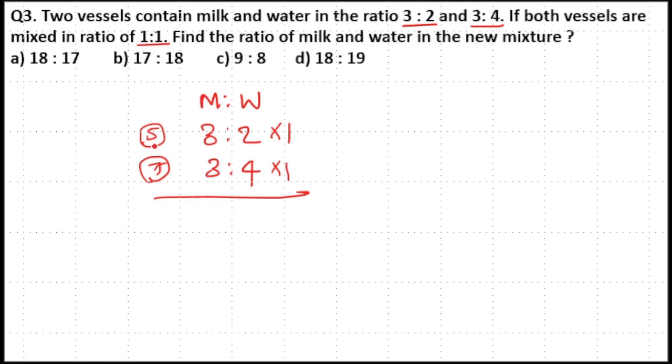So to make it equal multiply total parts of first ratio with the second ratio and total parts of second ratio with the first ratio. That is multiply 5 with 3:4 and multiply 7 parts with 3:2. Then this ratio will become equal.